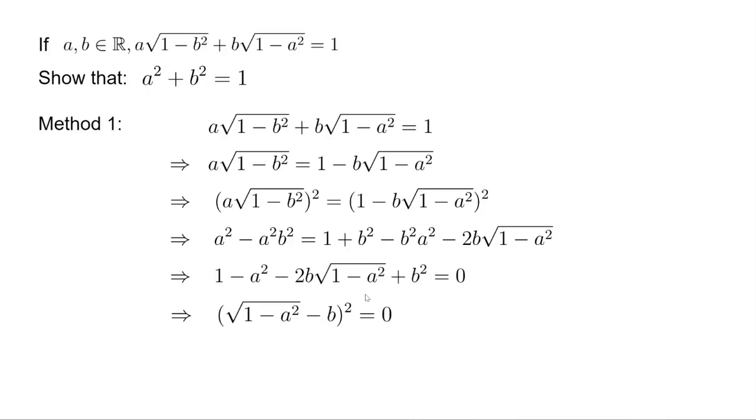Then it's straightforward because we know b equals plus or minus square root of 1 minus a squared. Square both sides, we get a squared plus b squared equals 1. That's the conclusion we want to prove. This is a little tedious but pretty straightforward.